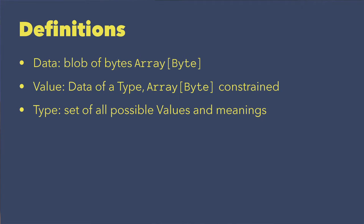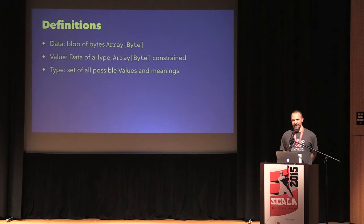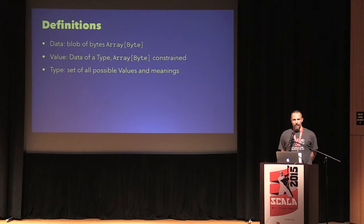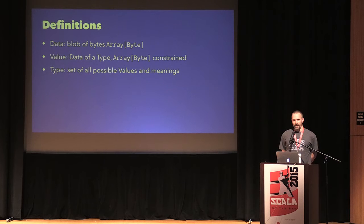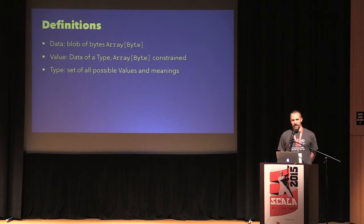We live with file systems right now that are effectively typed file systems with one type. They're like dynamic languages — they're unityped. Every file is the same. It's got a bunch of stuff in it. What's in it? Well, you might have some hints. You might have a file extension. You might just have a convention. You might look at the first few bytes and see a BOM or XML declaration, whatever.